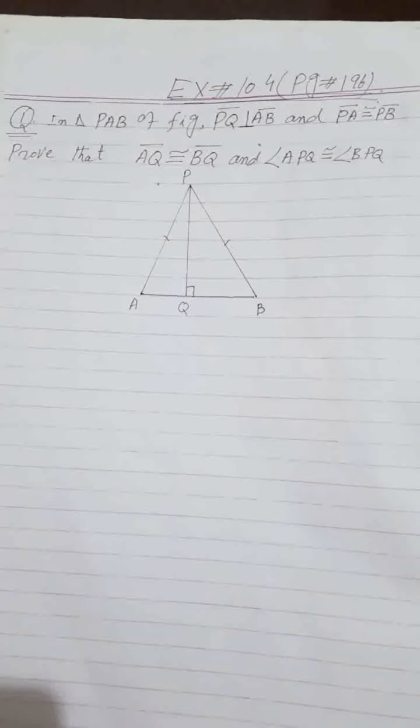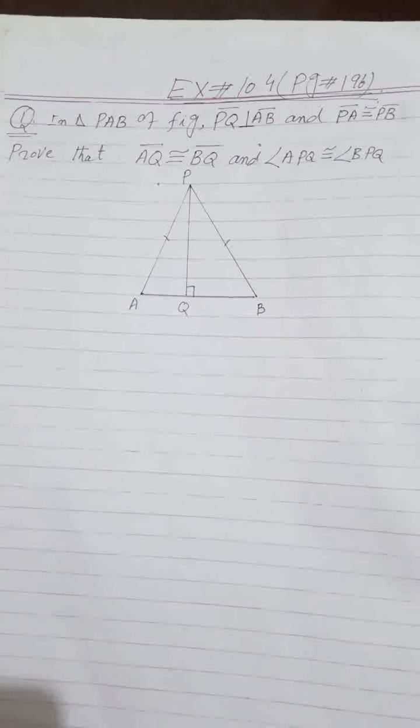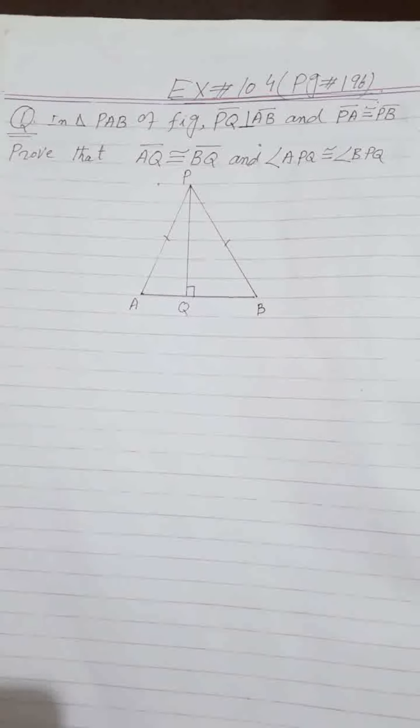Exercise 10.4, page number 196, question number one. In triangle PAB, PQ is perpendicular to AB and PA is congruent to PB. We have to prove that AQ is congruent to BQ, and angle APQ is congruent to angle BPQ. This is also a small theorem and you will understand it easily — it is not a difficult concept.